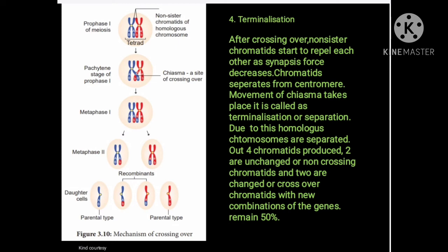The fourth stage in the mechanism of crossing over is terminalization. After crossing over, non-sister chromatids start to repel each other as the synapsis force decreases. The chromatids separate from the centromere and the movement of chiasmata takes place; this is called terminalization or separation. Due to this, homologous chromosomes are separated. Out of four chromatids, two are unchanged or non-crossing chromatids and two are changed or crossing-over chromatids with a new combination of genes.